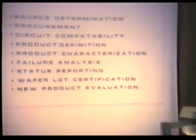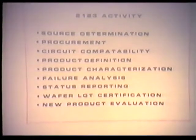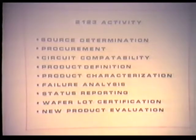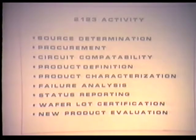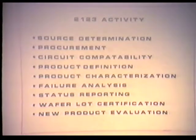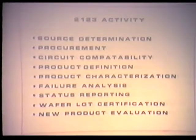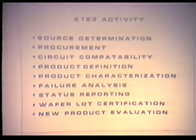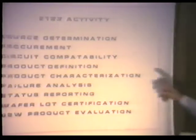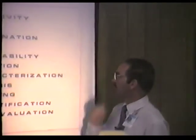Let's talk about activities in 21-23. We must determine the source for devices once users tell us what they want — whether anyone builds it, in the quantity and quality we need, and whether it can be procured in time. We also worry about circuit compatibility, sitting down with the user to find out how they'll use it. A user may have selected a part for a breadboard that works fine but hasn't accounted for temperature, radiation, long-term power, or heat dissipation requirements.